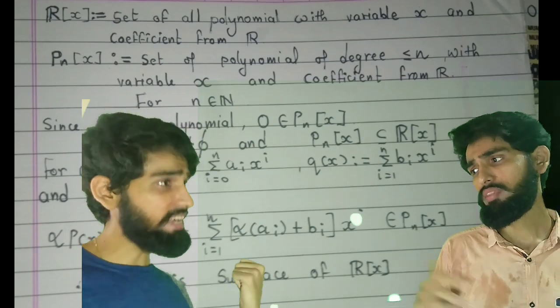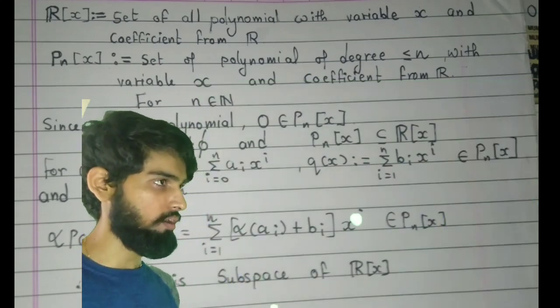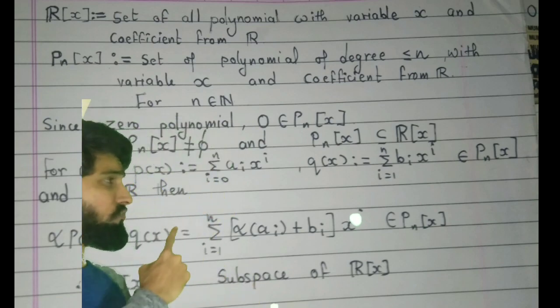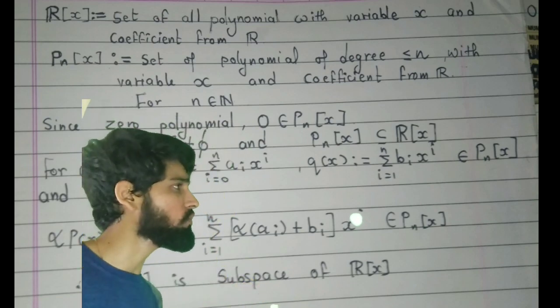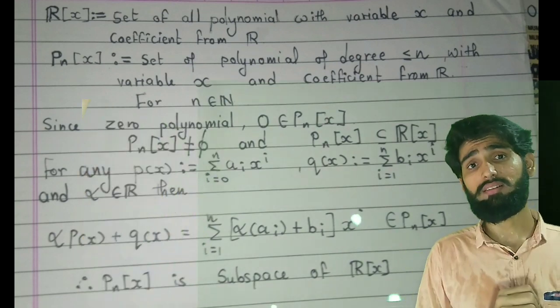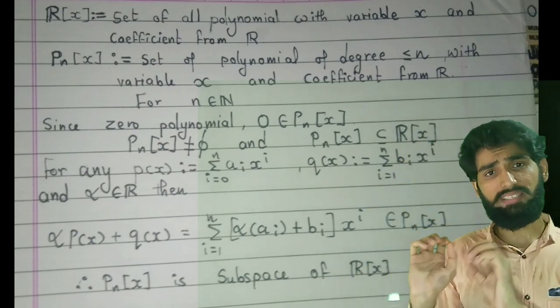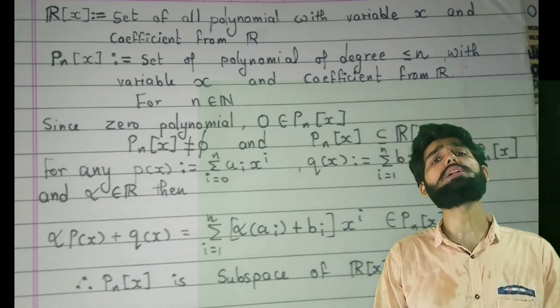Wait, just now you told me that P_n[x] contains all polynomials of degree less than or equal to n, and now you are writing p(x) and q(x) as polynomial of degree n. Can you explain it why? Thus in this case you observe, while writing P_n[x] I am writing it as polynomials of degree n.